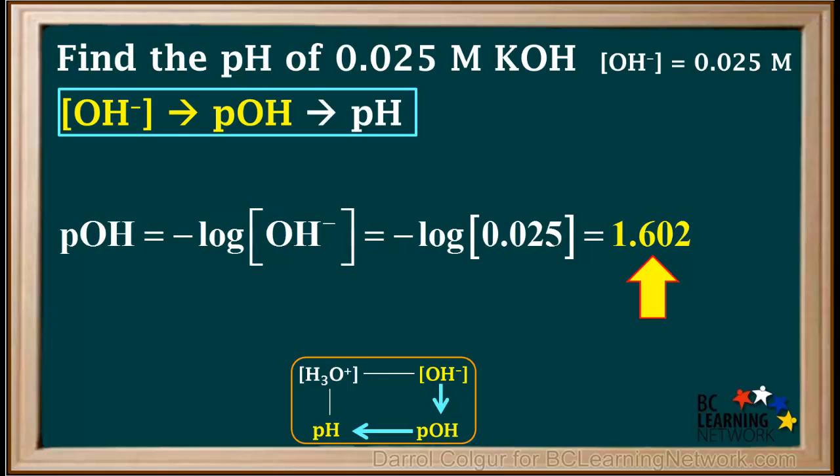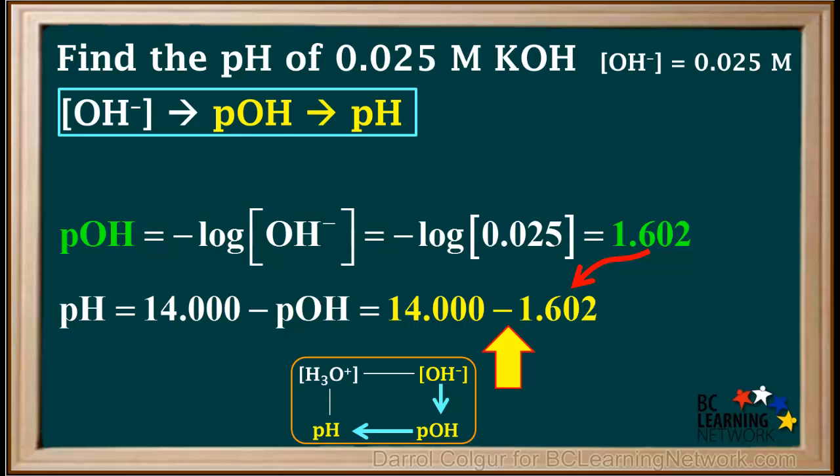We're carrying one extra significant figure until we get to the last calculation. In the second step of this problem, we convert from pOH to pH. We'll use the formula pH equals 14 minus pOH, which is 14 minus 1.602, which equals 12.398.